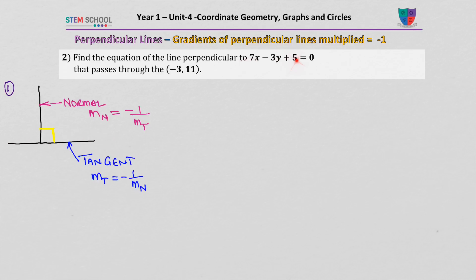This is the tangent equation and now we need to find the normal equation. To find the normal we need to find the gradient of the normal, which equals minus 1 over m, the gradient of the tangent. We know what the equation of the tangent is: 7x minus 3y plus 5 equal to zero. We need to make that equation look like y equals mx plus c.